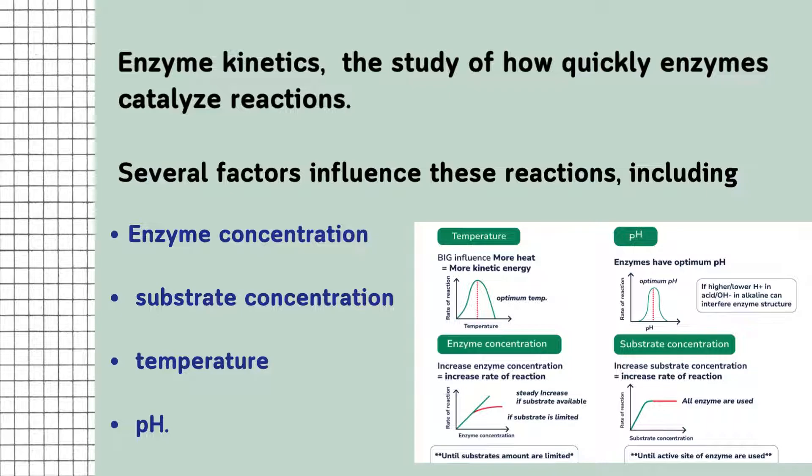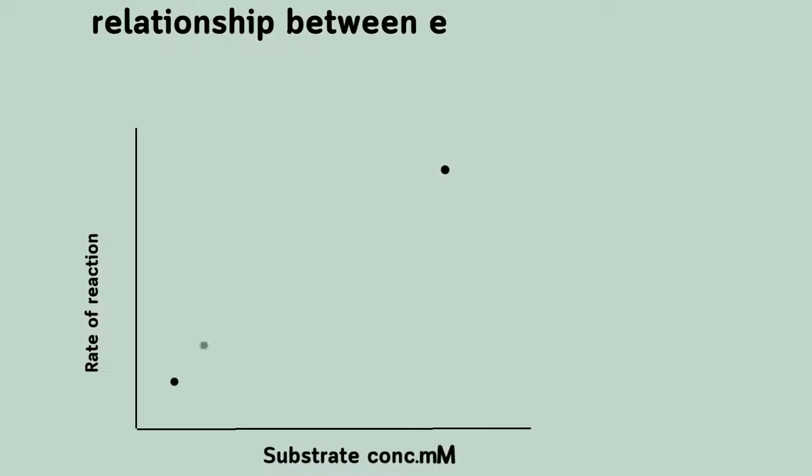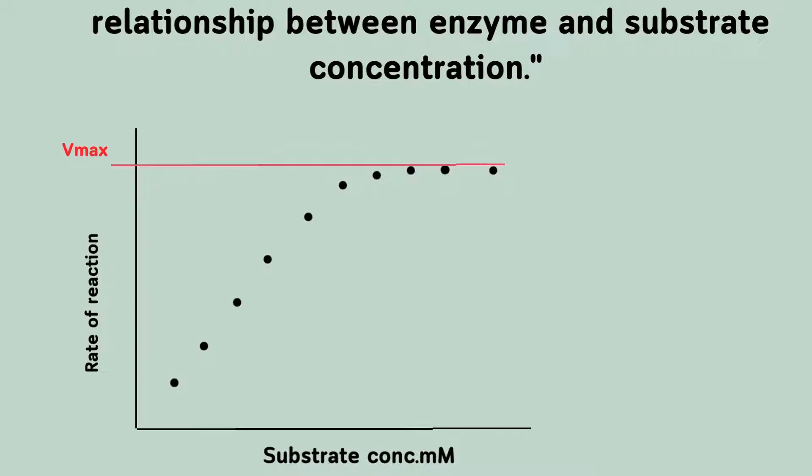But today, we'll focus on the relationship between enzyme and substrate concentration. One of the key models in enzyme kinetics is the Michaelis-Menten equation. It describes how the reaction rate changes with varying substrate concentration.